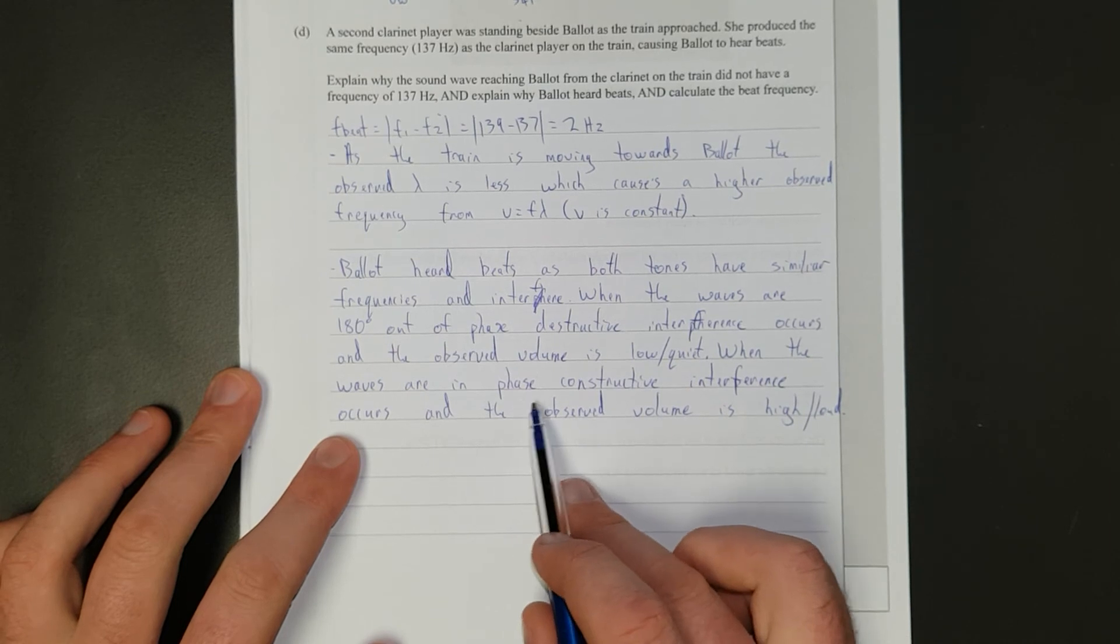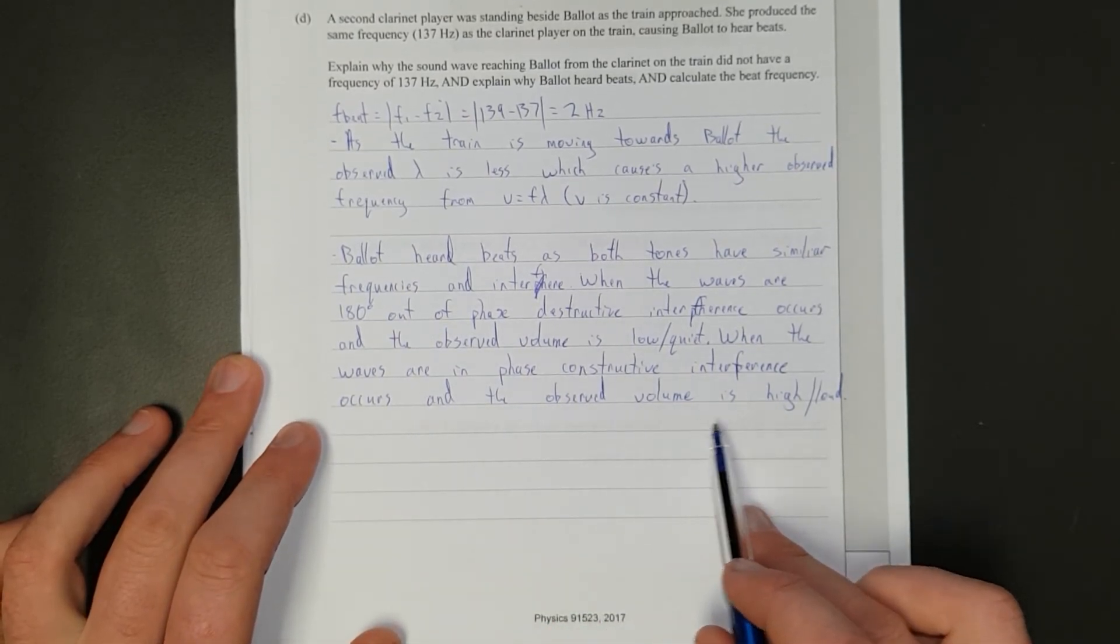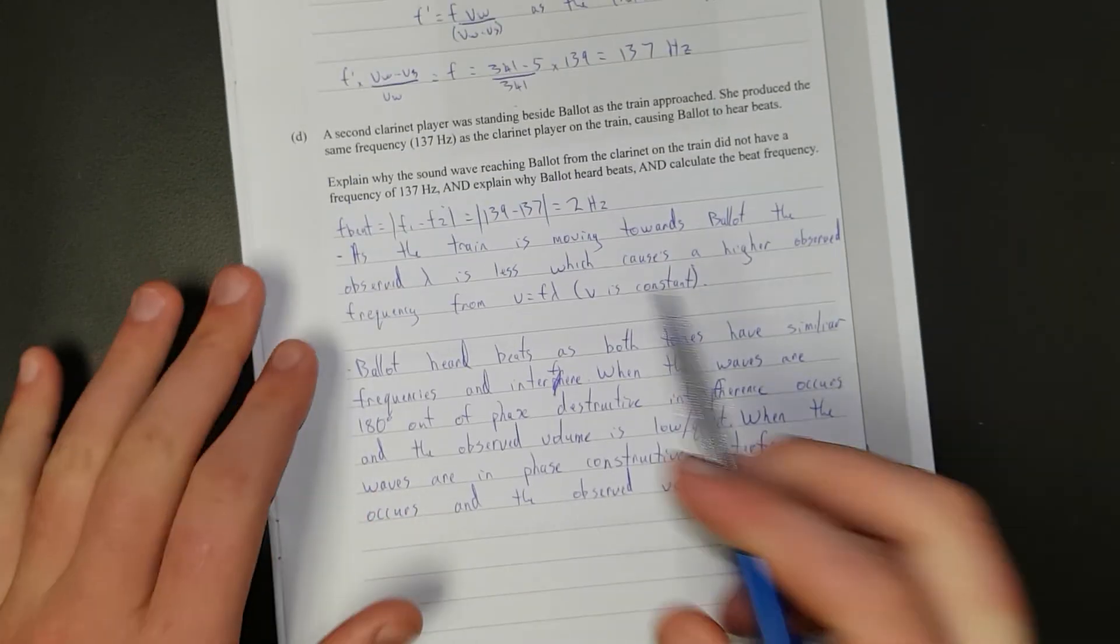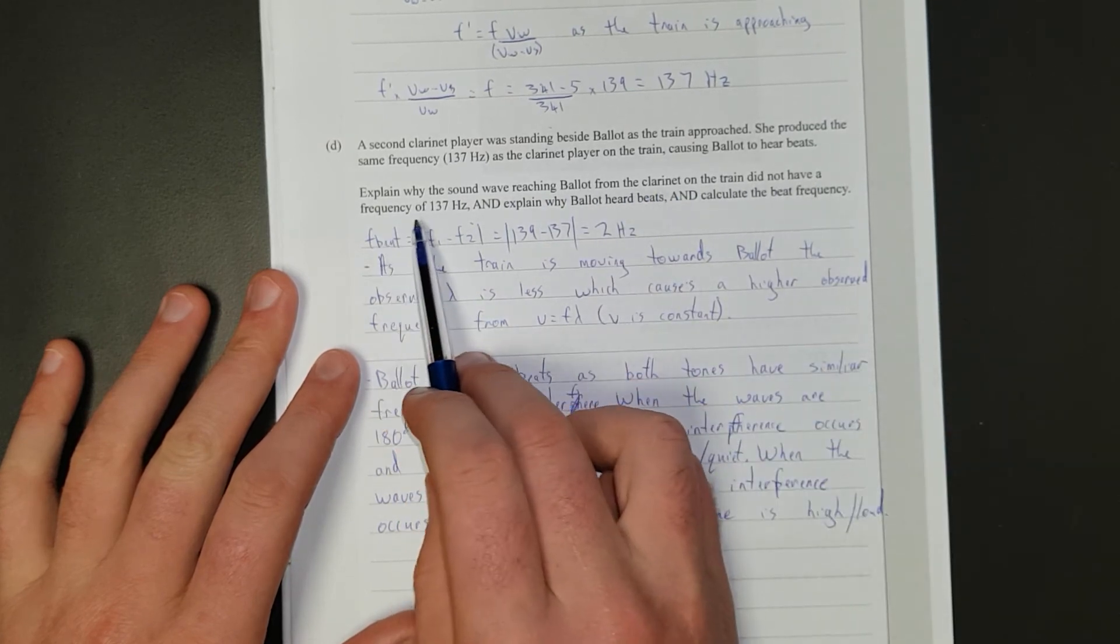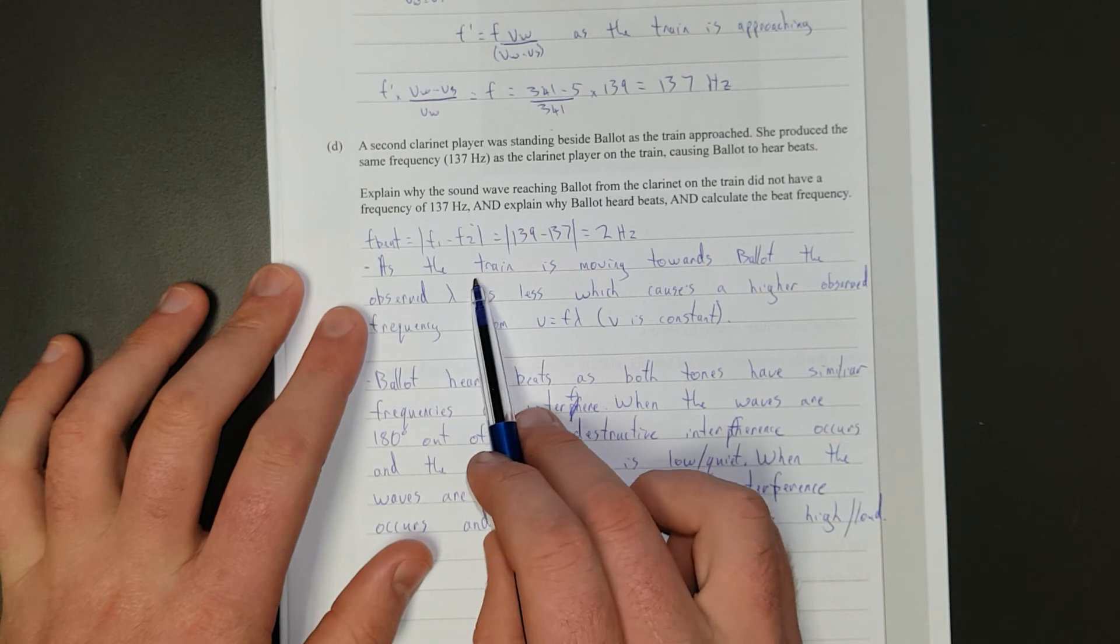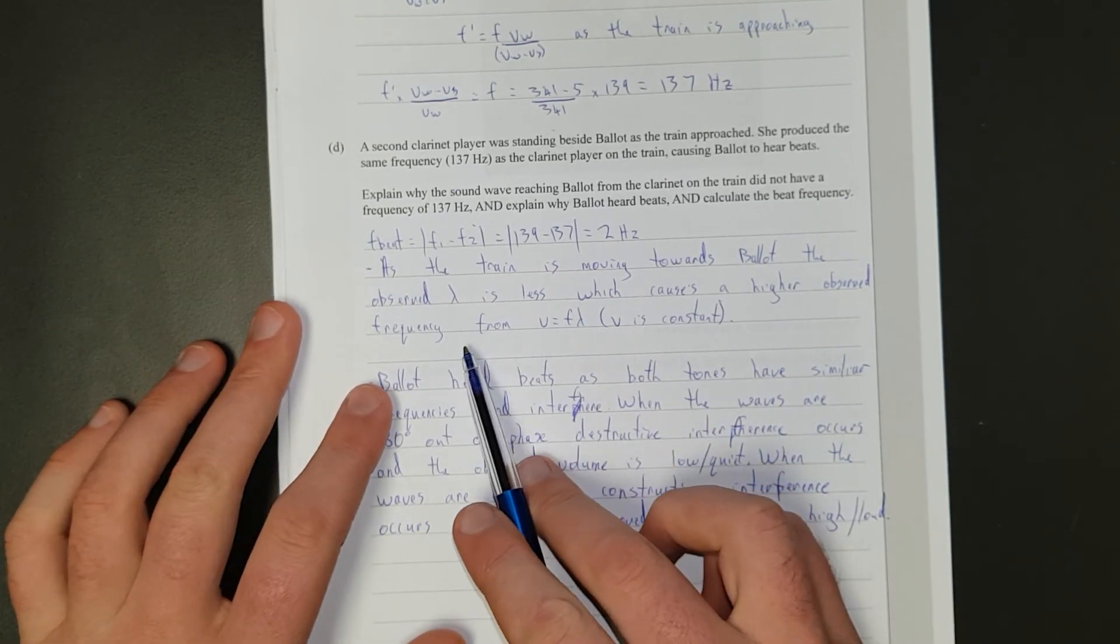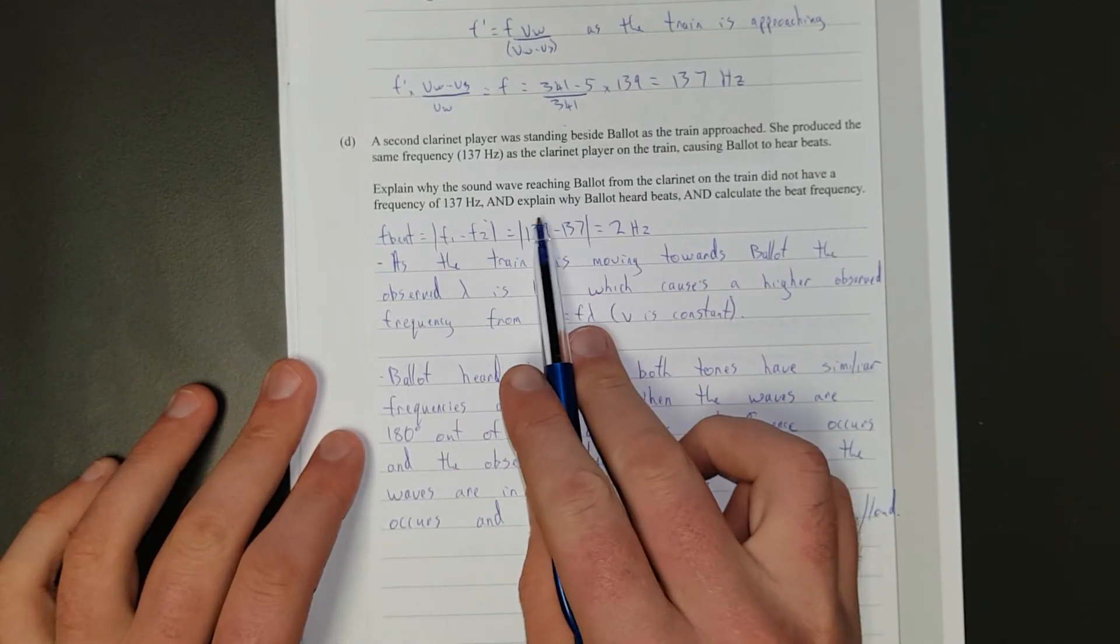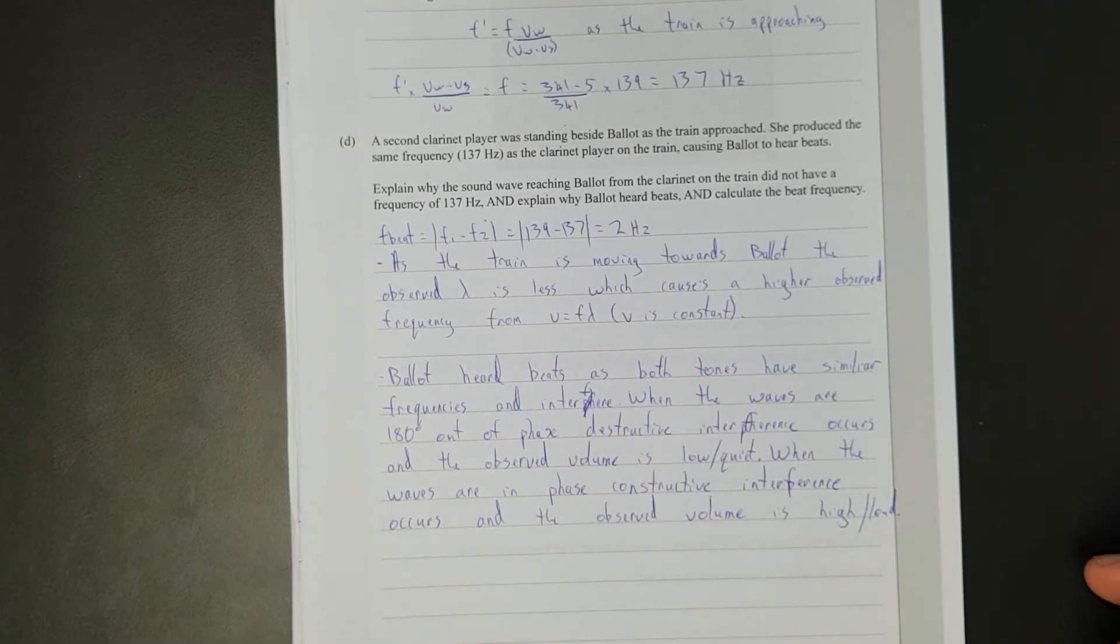When the waves are in phase, constructive interference occurs, and the observed volume is high or loud. So, that covers, explain why the sound reaching did not have a frequency of that. This here covers that, because the observed wavelength is less, which causes a higher observed frequency. You could say that the waves are getting squeezed together. We've explained why they heard beats, and we calculated the beat frequency.